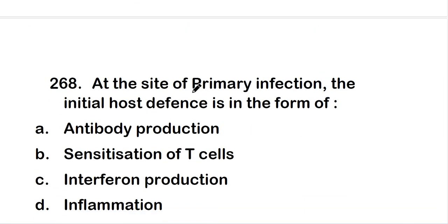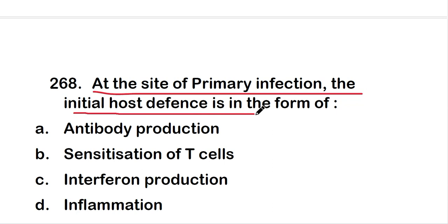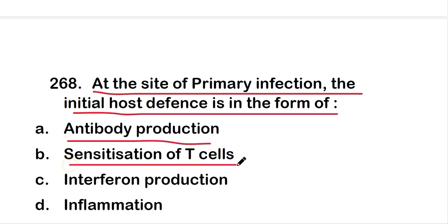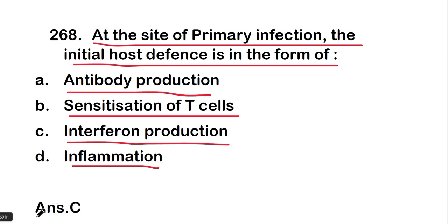The next question: at the site of primary infection, the initial host defense is in the form of — antibody production, sensitization of T cells, interferon production, or inflammation? The right answer is option C — interferon production. At the site of primary infection, the initial host defense is in the form of interferon production.